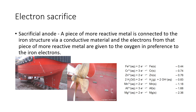The second method is electron sacrifice — this is where the oxygen doesn't care where the electrons come from. The first type is called a sacrificial anode: a piece of more reactive metal is connected to the iron structure via conductive material, and the electrons from that more reactive metal are given to the oxygen in preference to the iron's electrons. The oxygen takes electrons from the sea of delocalized valence electrons, and if connected to a more reactive metal, those electrons will be preferentially taken instead.